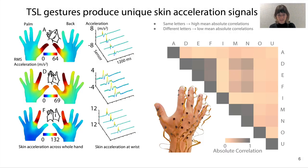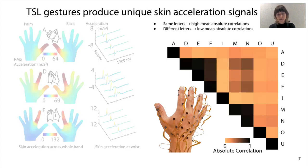To determine whether TSL gestures can be differentiated by measuring skin acceleration, we placed two 42-element sensing arrays over the back and palm of the hand to capture a subset of letters. Each letter yielded distributions of RMS acceleration that reflected its contact location and unique spectrotemporal nature. Furthermore, same letters show high correlations compared to distinct letters, even when considering data from a subset of sensors at the wrist.